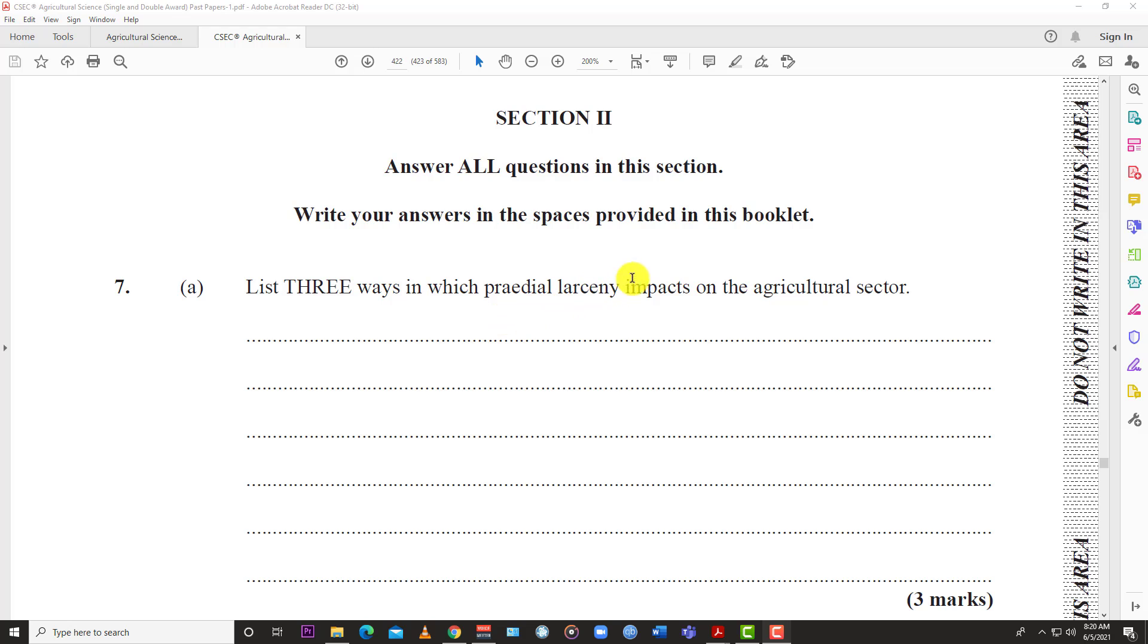List three ways in which predial larceny impacts on the agricultural sector. Predial larceny is the stealing of agricultural products. We know it can be very impactful and negative on the sector. For one, economic loss. If you're stealing the produce, then the farmer cannot sell them and they're gonna lose money. So there's an economic loss tied to predial larceny.